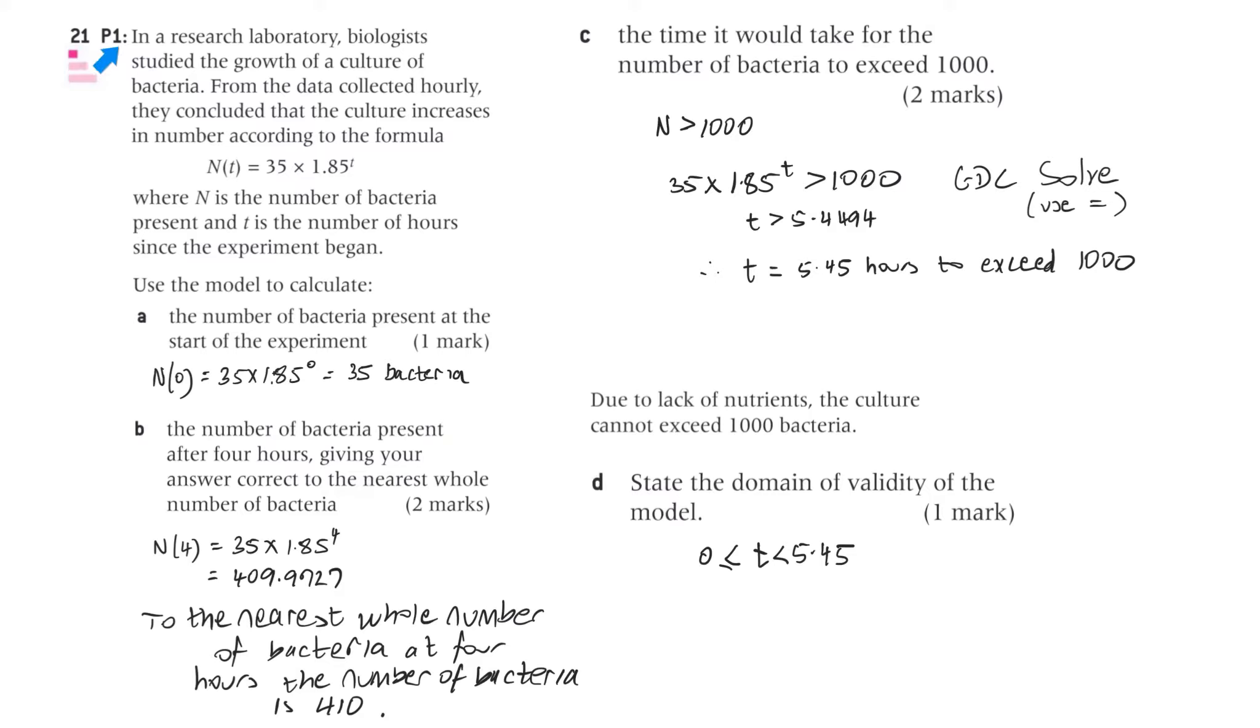Let's go through question 21. It's a paper one question. In a research laboratory, biologists studied the growth of a culture of bacteria. From the data collected hourly, they concluded that the culture increases in number according to this formula.